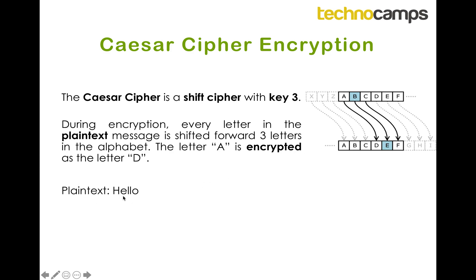So we've got our plain text message here which is 'hello'. Three letters forward from H is I, J, K, so we should see that the cipher letter is K. Three spaces forward from E — we can follow the line here and we see that it's H. Three spaces forward from L is L, M, N, O, so we get an O. Three spaces forward from L is still going to be O, and then three spaces forward from O is R.